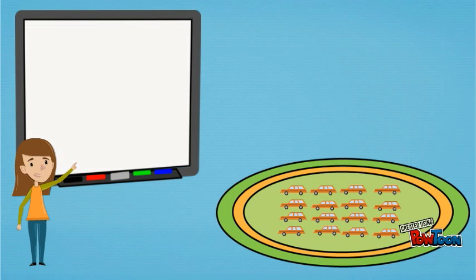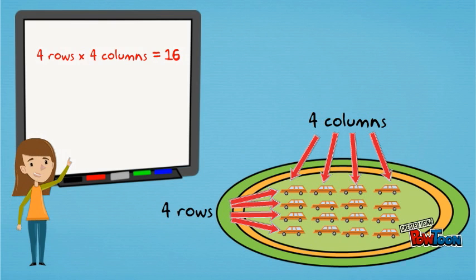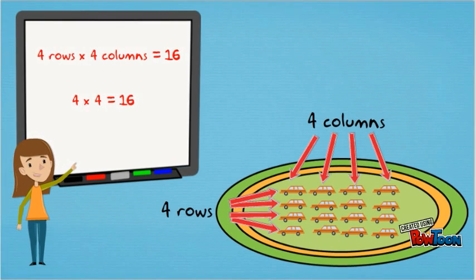Let's look at the array of toy cars on the carpet. There are one, two, three, four rows of cars on the carpet. There are one, two, three, four columns of cars on the carpet. Four rows times four columns equals sixteen. Four times four equals sixteen.